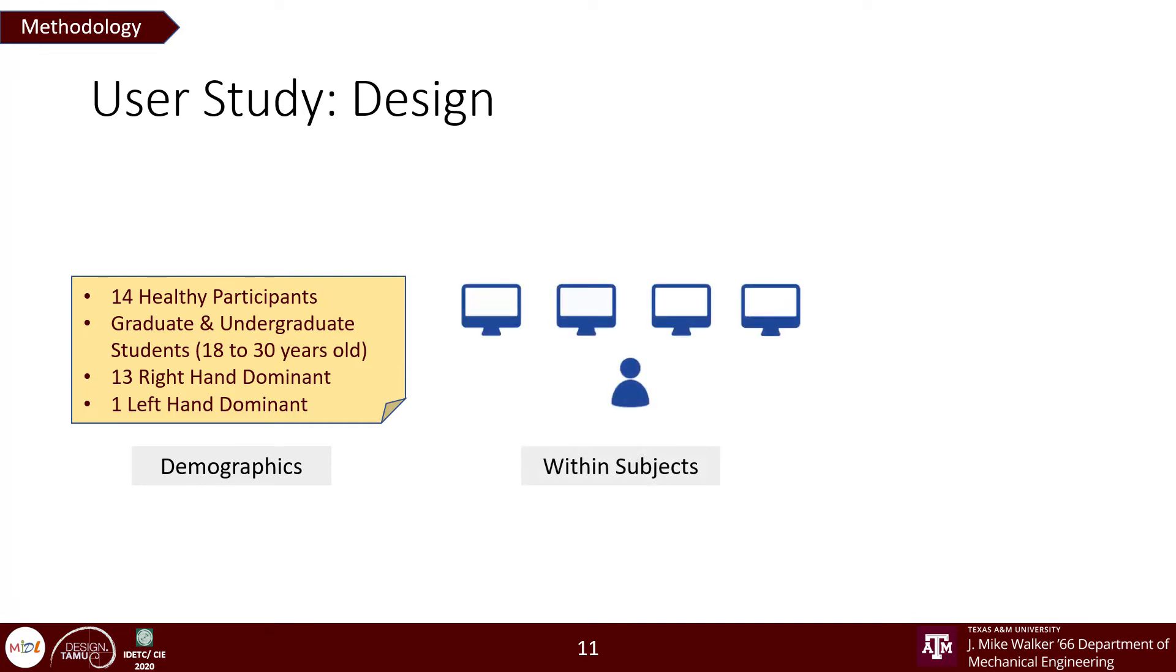This user study was a within-subjects experiment where each participant performed the spring-pulling task for four different experimental controls. First is where the force feedback is active on both devices. Second is where we set the spring stiffness to zero and there is no force feedback. Third is where the device only on the user's dominant hand is on, and fourth is where device only on the user's non-dominant hand is on. In the last two cases, the force feedback is similar to the spring having its one end fixed.